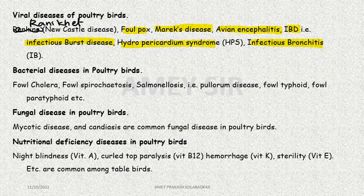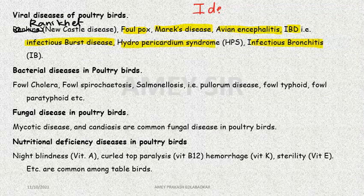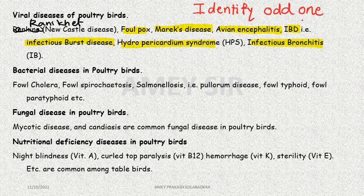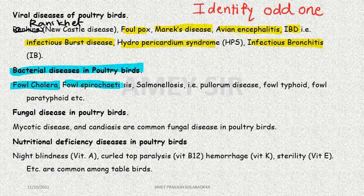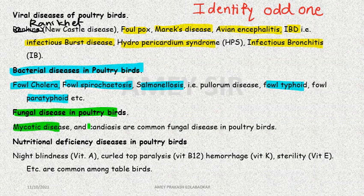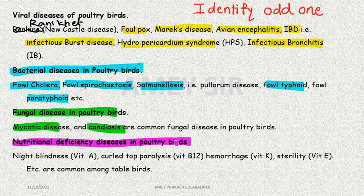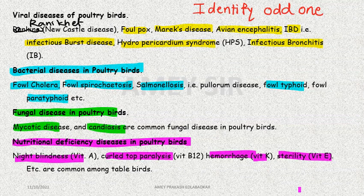From a NEET perspective, an important question type is to identify the odd one out - one disease-causing organism from another group will be given as an option to identify. Bacterial diseases include fowl cholera, fowl spirochetosis, salmonellosis, fowl typhoid, and fowl paratyphoid. Fungal diseases include mycotic diseases and candidiasis. Nutritional deficiency diseases also develop in poultry birds - night blindness, curled toe paralysis, hemorrhage due to Vitamin K deficiency, and sterility due to Vitamin E deficiency.